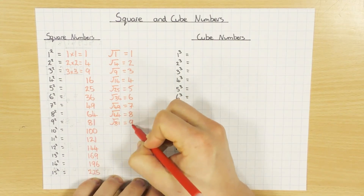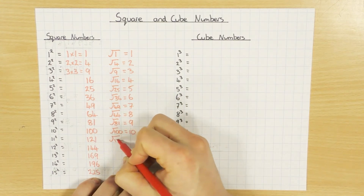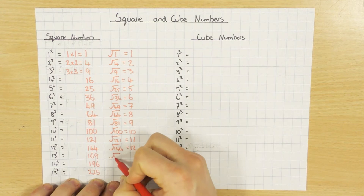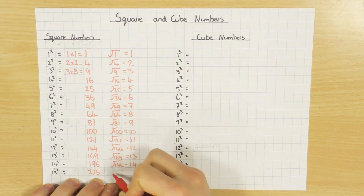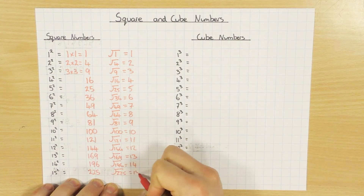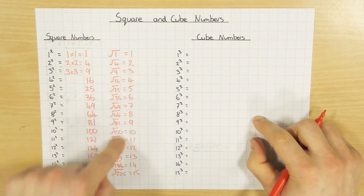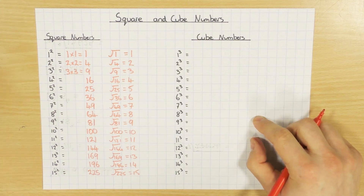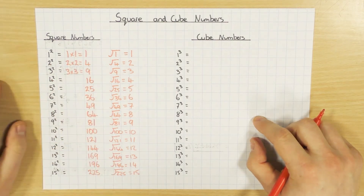I'll just carry on filling this in. So if you square a number, you get all the square numbers here, and to go backwards you do the square root — if you square root the square number, you get back to the original. Key thing here: if it says in a GCSE question, like, what is the sixth square number? Well, it's just 6 squared. You don't have to write them all out — just do 6 squared, because that tends to waste a bit of time in the exam.